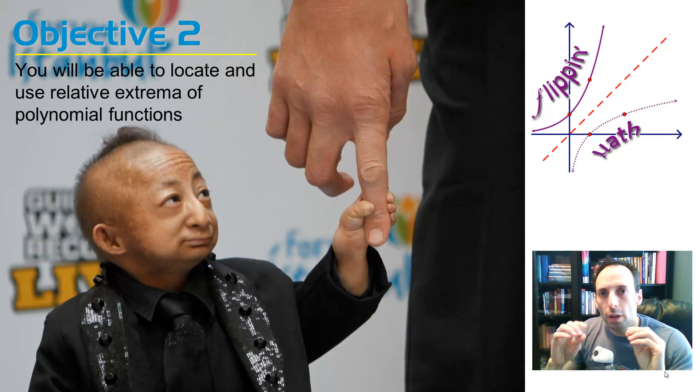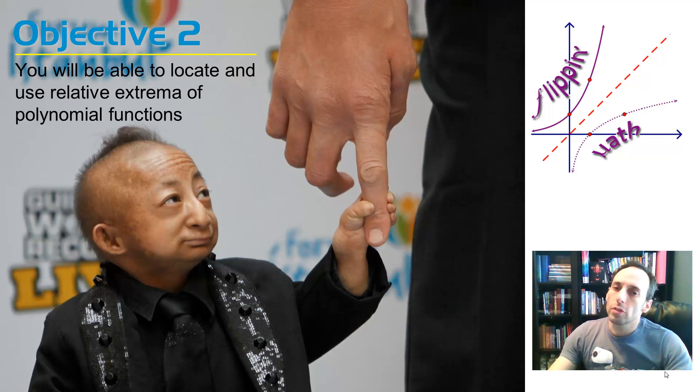Now, without actually having a knowledge of calculus, it's hard to do this on paper or algebraically. So in your first semester of calculus, if you choose to do it, that's one of the applications of a derivative, the first derivative. So in the meantime, we're just using our graphing calculator to approximate where those values are. It's going to be pretty simple, just like the first objective. It's mostly calculator application.